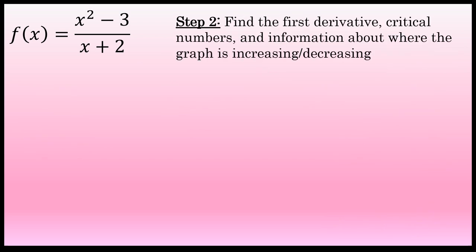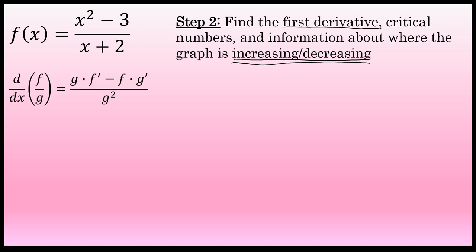Step 2 is the first step that requires calculus. In the process of drawing this graph, we're going to find the first derivative, which will tell us all we need to know about where the function is increasing and decreasing. To find the derivative of a rational function like this, we're going to need the quotient rule. The quotient rule states that the derivative of a fraction is the denominator times the derivative of the numerator, minus the original numerator times the derivative of the denominator, all over the denominator squared.